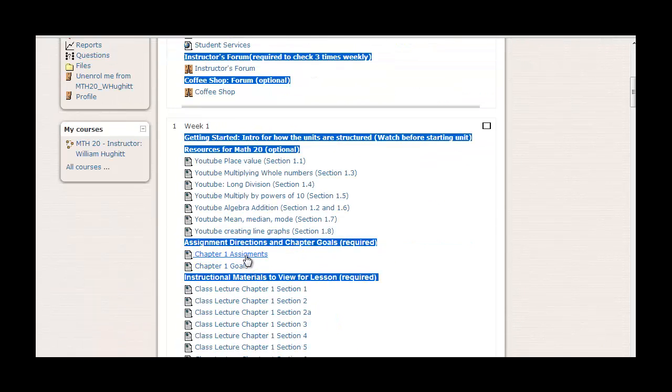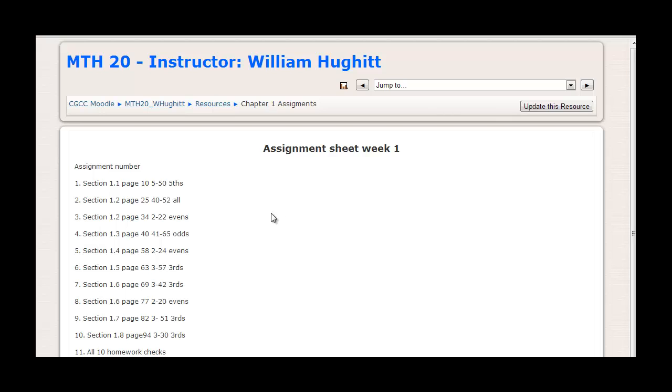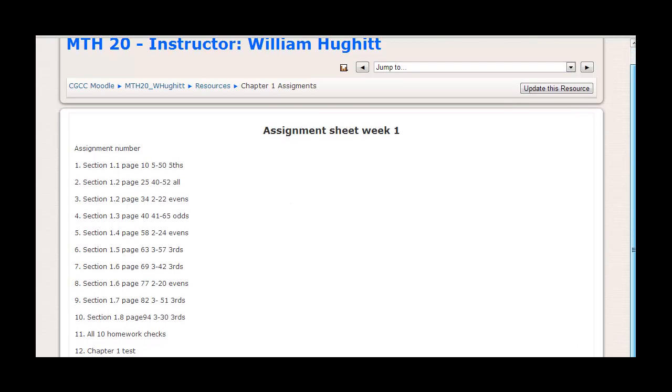Then I would have you look at the assignments next. This is going to tell you what each section is and your assignment for each one. So in this particular one, assignment sheet, each one, section 1-1, it's on page 10, problems start there. The assignment is 5 to 50 every fifth. Section 1-2 starts on page 25. You're going to do problems 40 to 50 all.